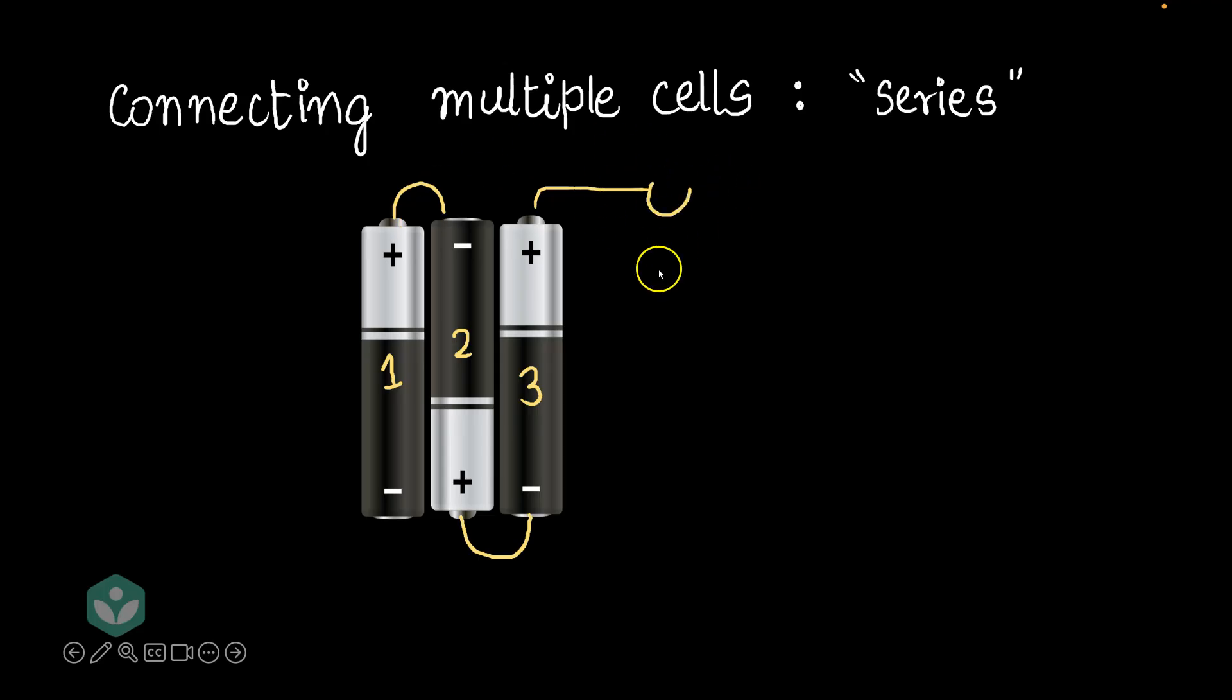There you go. Now you get a large battery where this is the positive terminal, and this is the negative terminal of our larger battery. And you would have seen this arrangement in remotes and toys. If you haven't noticed, I would encourage you to go and open one of your remotes and check it out.